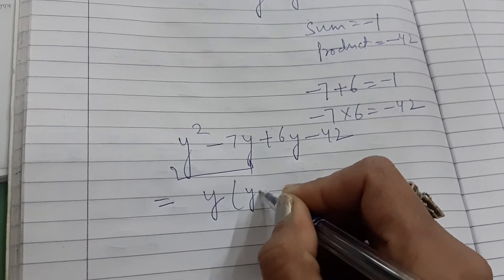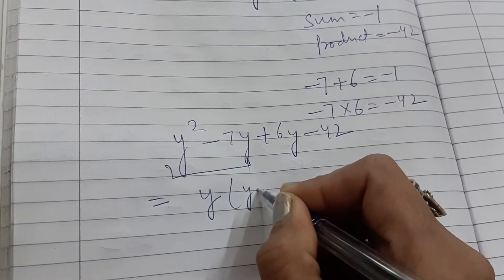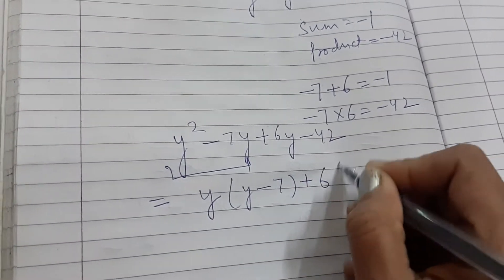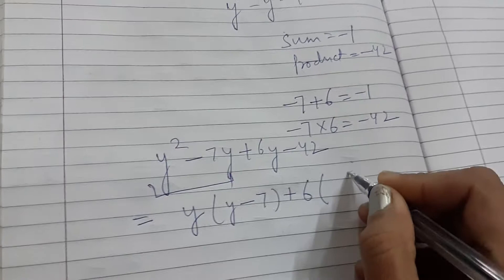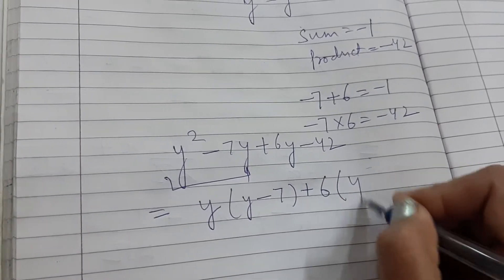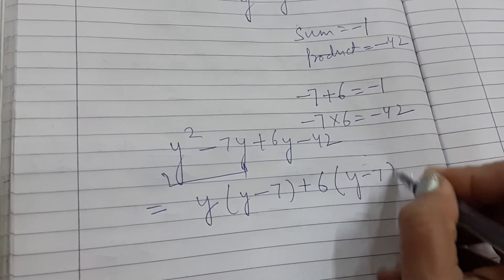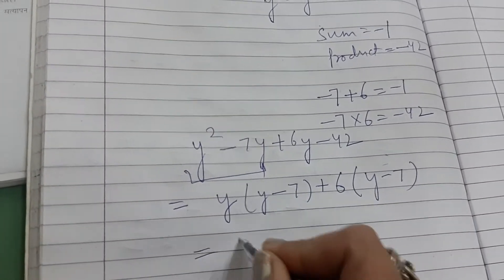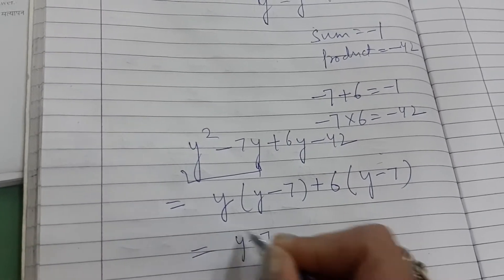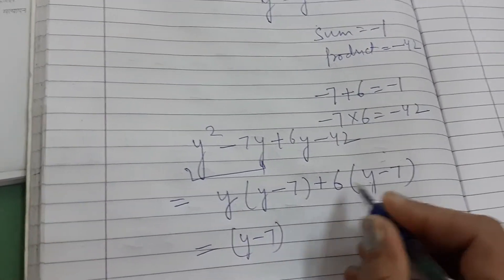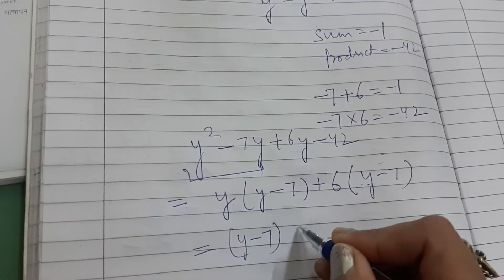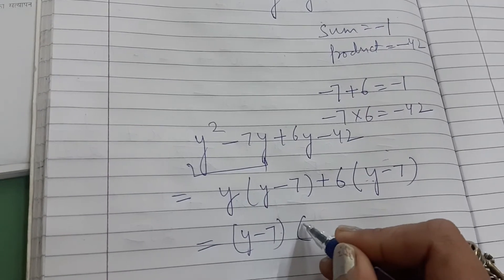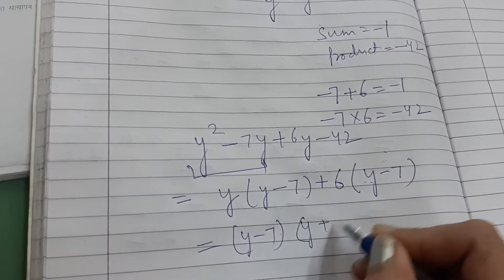So you get y into y minus 7. Now take 6 common from the next two terms, so this is plus 6 into y minus 7. Now y minus 7 is common in these two terms, so the answer is y minus 7 into y plus 6.